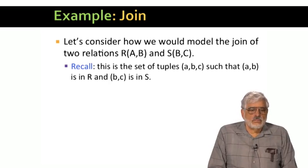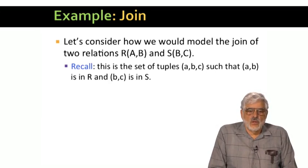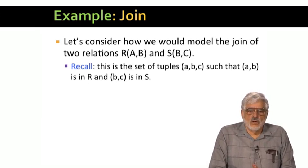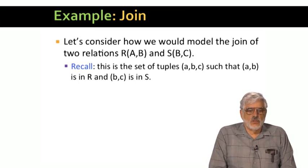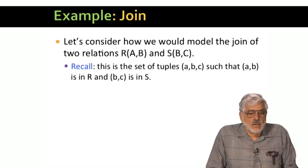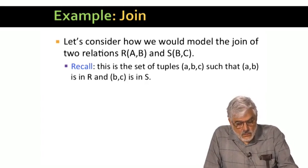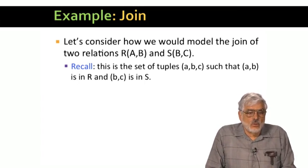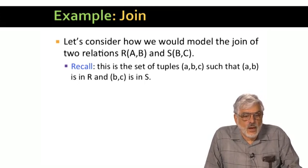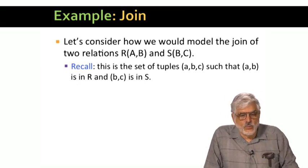To see the difference, consider the problem of taking the natural join of two relations. R with attributes or column names A and B, and S with attributes B and C. If you are unfamiliar with the concept of the natural join, we're looking for pairs of tuples, one from R and one from S, that agree on their B columns. Any such pair of tuples is spliced together to form a tuple with the A value from the R tuple, the common B value, and the C value from the S tuple. That is, we get those tuples A, B, C, such that AB forms a tuple of the R relation, and B, C forms a tuple in the S relation.